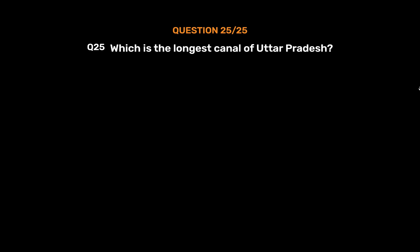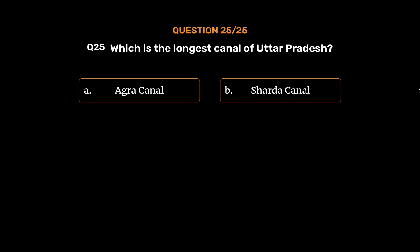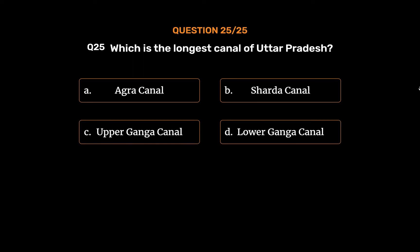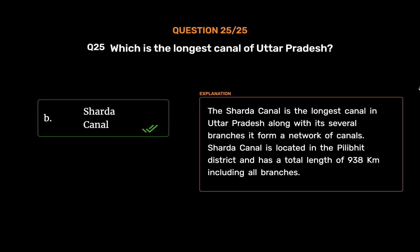Question No. 25: Which is the longest canal of Uttar Pradesh? The correct answer is Option B: Sharda Canal. The Sharda Canal is the longest canal in Uttar Pradesh; along with its several branches it forms a network of canals. The Sharda Canal is located in the Pilibhit district and has a total length of 938 km including all branches.